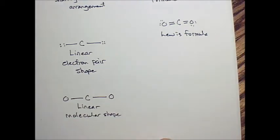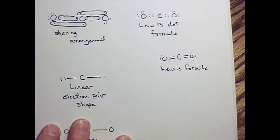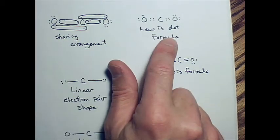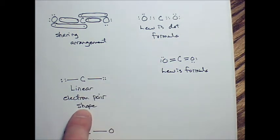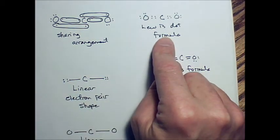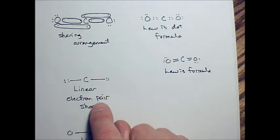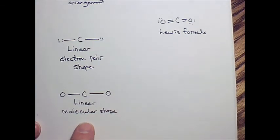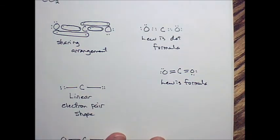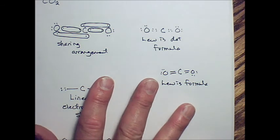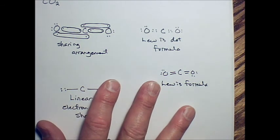So the step-by-step process is going to be the same for finding molecular shapes. Start with a sharing arrangement, Lewis dot formula, Lewis formula. Do the electron pair shape, starting with your Lewis dot formula. And then the next step can be either a modified electron pair shape or a molecular shape, depending on whether there are lone pairs or not. But the goal is to eventually get down to molecular shape. If you will follow this step-by-step process, you should always get the correct answer.